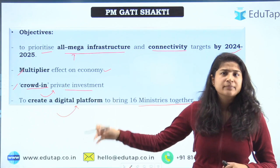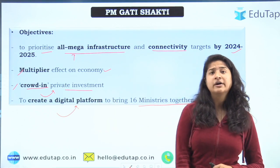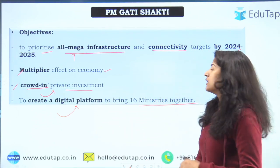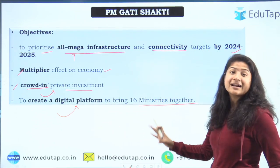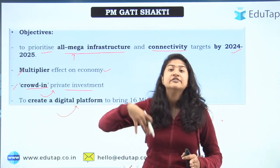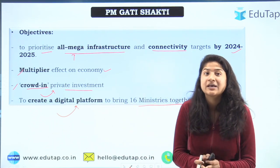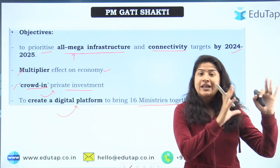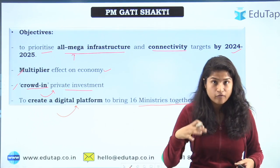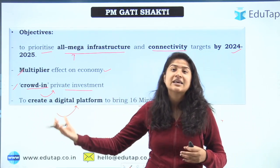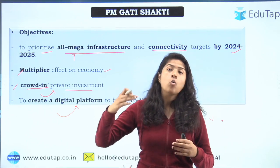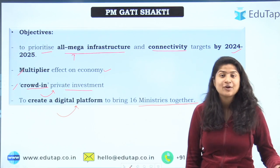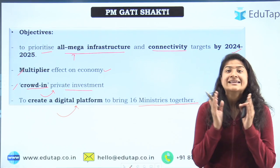The next objective is to create a digital platform to bring 16 ministries together. These 16 ministries include the railway department, roadways department, inland waters, petroleum department, electric department — every department related to infrastructure projects. They will all be clubbed together on a digital platform — a specific online portal where all ministries upload their work so other ministries can check what projects are going on and synchronize accordingly.